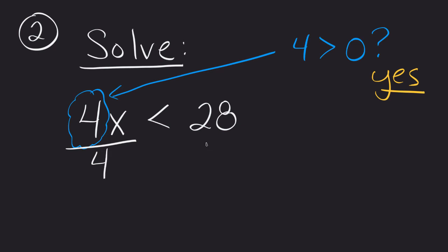Yes, this works. So we can go ahead and use this case exactly the same way. Divide by 4. In this case, the 4 divided by 4 will reduce to 1. The sign will remain the same, and 28 divided by 4 will become 7.